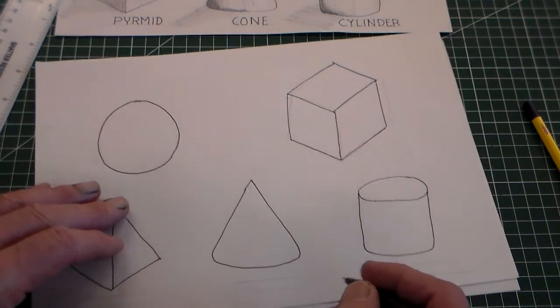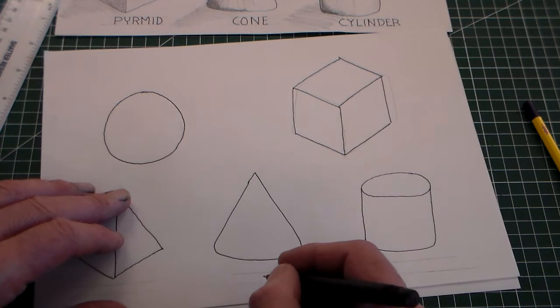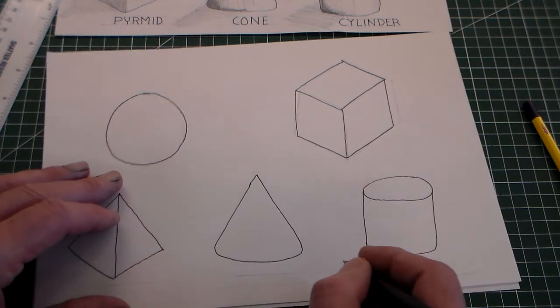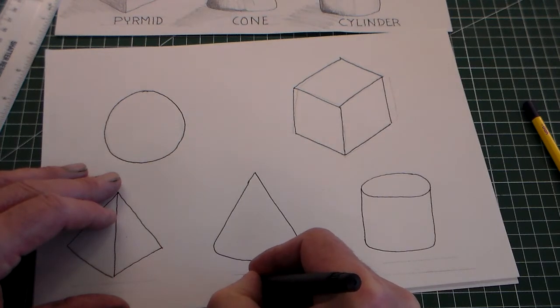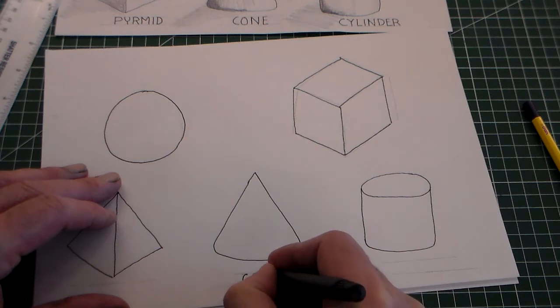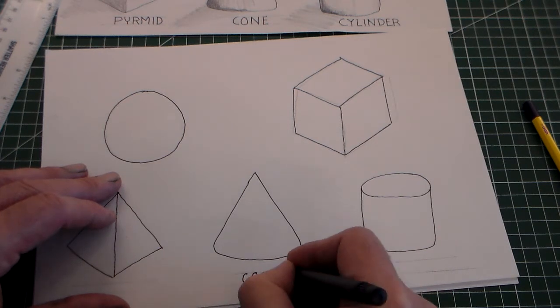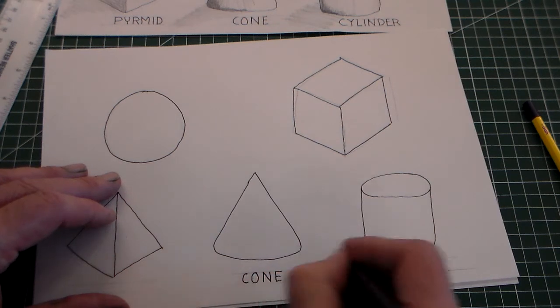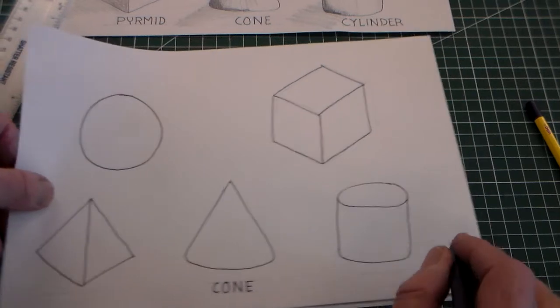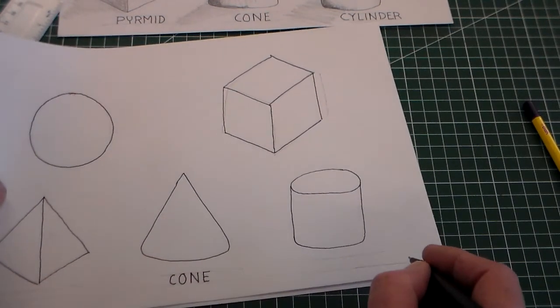I'm going to do this with a fine liner, you can do it with a pencil, and I'm going to use block capitals. I'm going to make sure that my letters touch the top and bottom of each line and I keep my lettering as neat as possible.